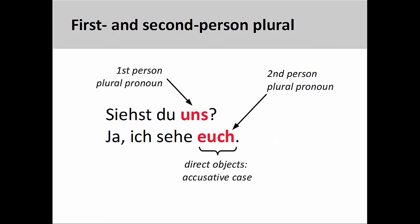This slide is a variation on what you have seen earlier, with plural personal pronouns being used in place of the singular pronouns. Again, as both pronouns are the direct object of the verb sehen, they must be in the accusative case.